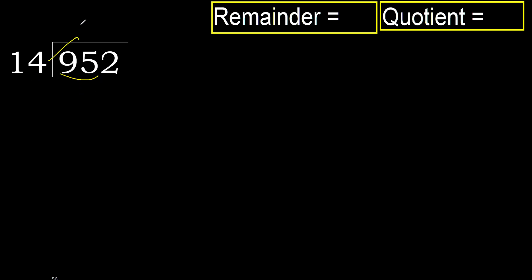14 multiplied by which number is nearest to 95, but not greater? 14 multiplied by 7 is 98, which is greater. Multiply by 6: 84 is not greater. 95 minus 84 is 11.